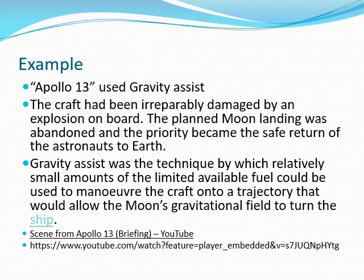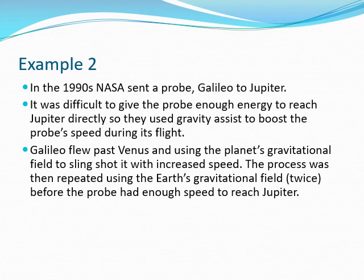Many probes also use gravity assist to add energy so they can reach their destination more easily. In particular, the Galileo probe sent to Jupiter flew past Venus and used the slingshot gravity assist effect a couple of times around Venus's gravitational field to gain enough speed to reach Jupiter.